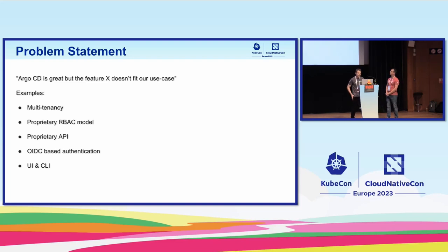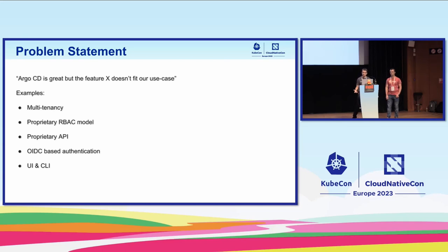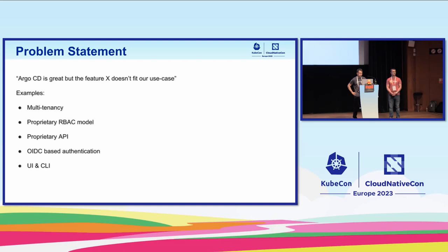This talk was based on constructive criticism from users, and it usually goes: 'Argo CD is great, but feature X doesn't fit our use case' — to the point that those users consider alternatives. So let's look at those features some users are complaining about. First is multi-tenancy. There are use cases where a cluster admin wants to manage the whole cluster and has no intention of sharing it with other teams, so multi-tenancy doesn't make a lot of sense for that use case.